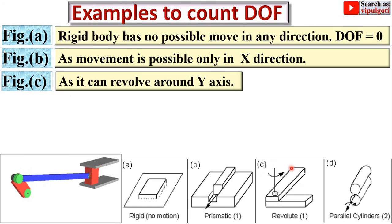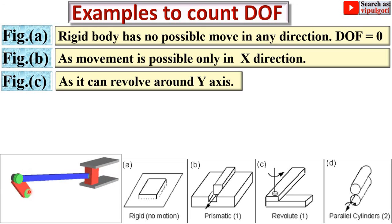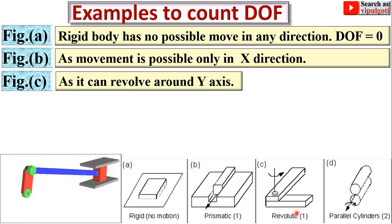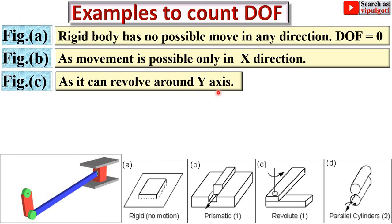Next, consider figure C: the body can revolve about the y-axis only. In this single-slider connection mechanism, this red-colored link revolves about this point. There is no other movement possible, so there is a single degree of freedom — it can revolve only about this axis. Therefore, the degree of freedom equals 1.